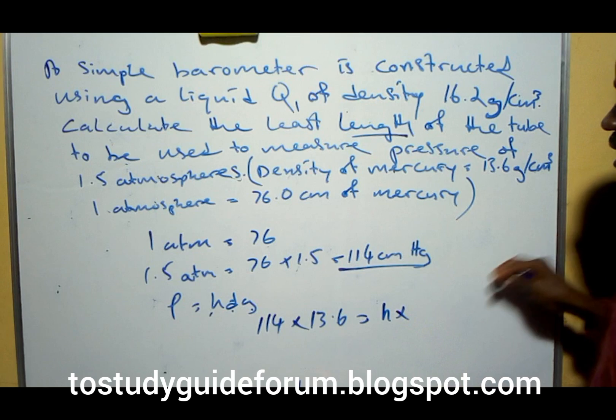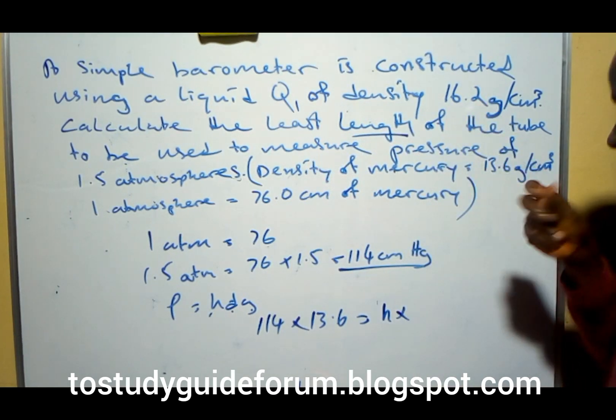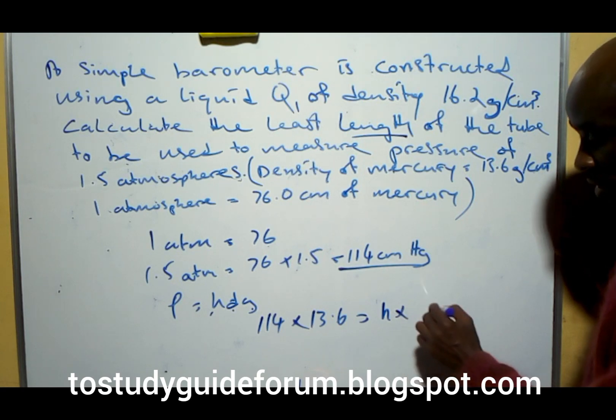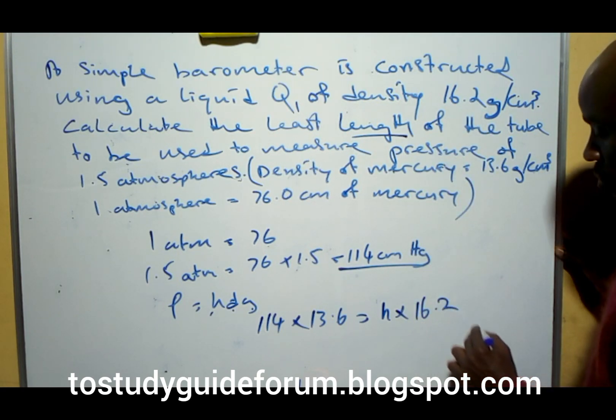So we talk about the height of this, of this density, the height in that tube, the density in the tube that we want the same thing. What we have here will be 16.2.